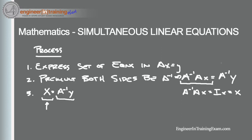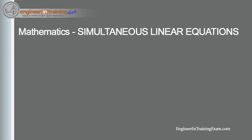As long as the inverse matrix of A exists, we can solve for all the unknown x values. If the inverse does not exist, the set of equations does not have a unique solution. Let's reinforce this concept with an example.